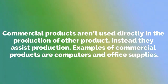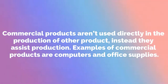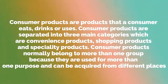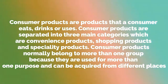Commercial products aren't used directly in the production of other products. Instead, they assist production. Examples of commercial products are computers and office supplies. Consumer products are products that a consumer eats, drinks or uses. Consumer products are separated into three main categories which are convenience products, shopping products and speciality products.